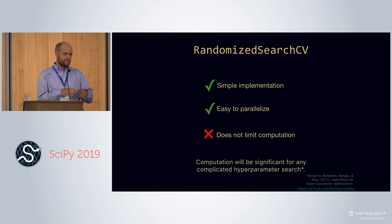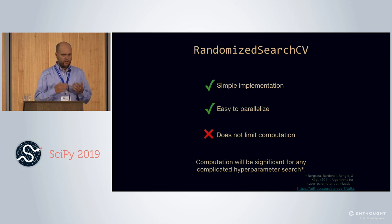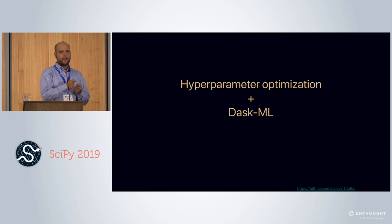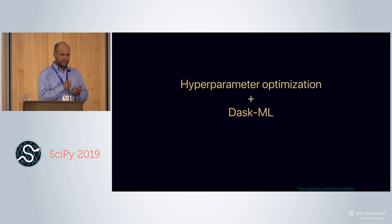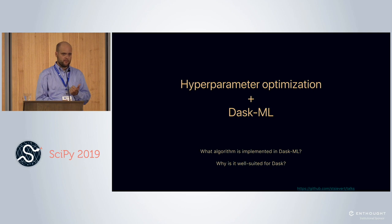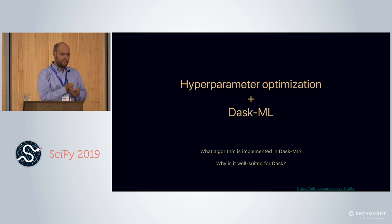My goal was to bring a better hyperparameter optimization algorithm to Dask. RandomizedSearchCV is pretty nice, but there's no limit on computation, so I focused on that. The questions I asked were: what algorithm should be implemented in DaskML — that's Dask's machine learning library — and why is it well-suited for Dask? How can Dask help this algorithm?